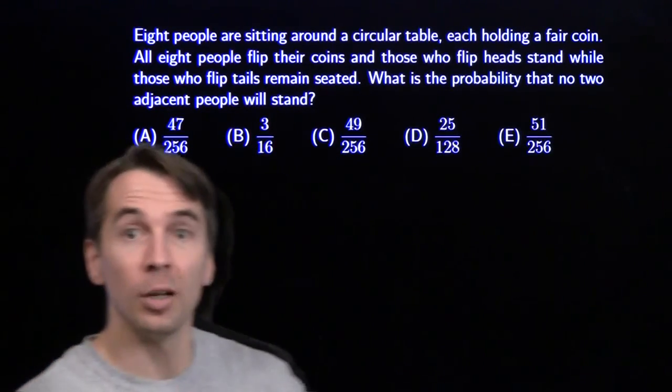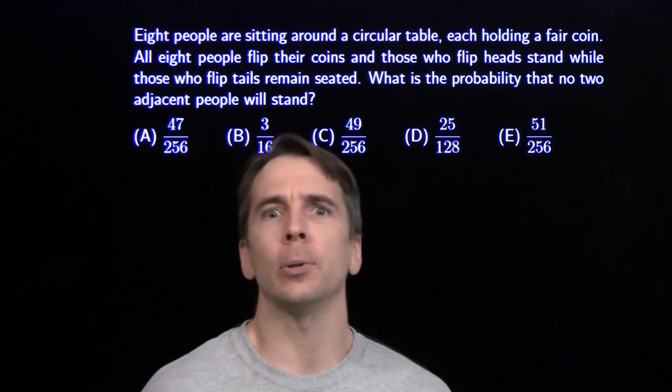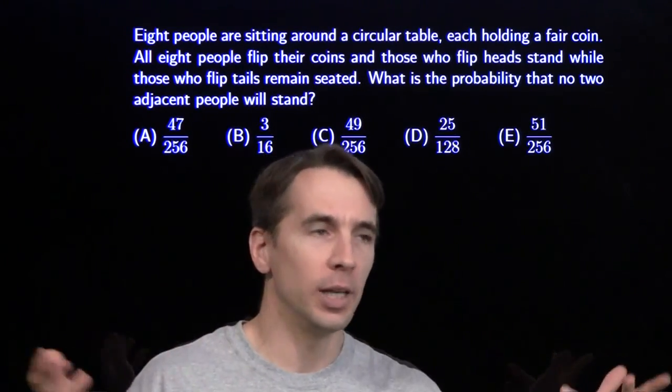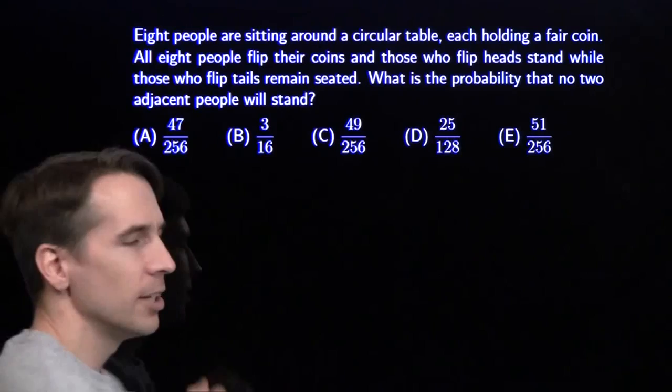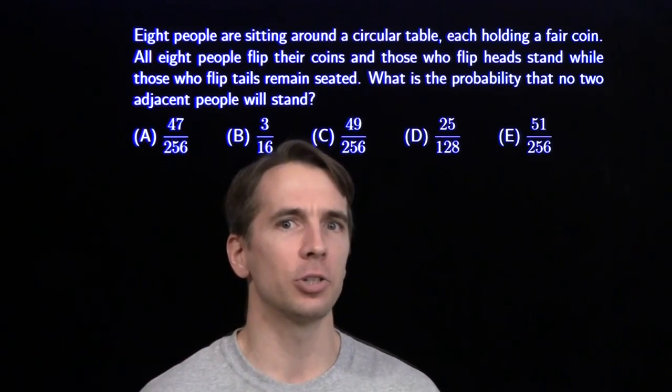Now we're going to start off by counting the number of possible outcomes. That's pretty easy. We have eight coins, two equally likely outcomes for each. Two to the eighth, that's 256 possible outcomes. Look at these answer choices. We're clearly barking at the right tree.